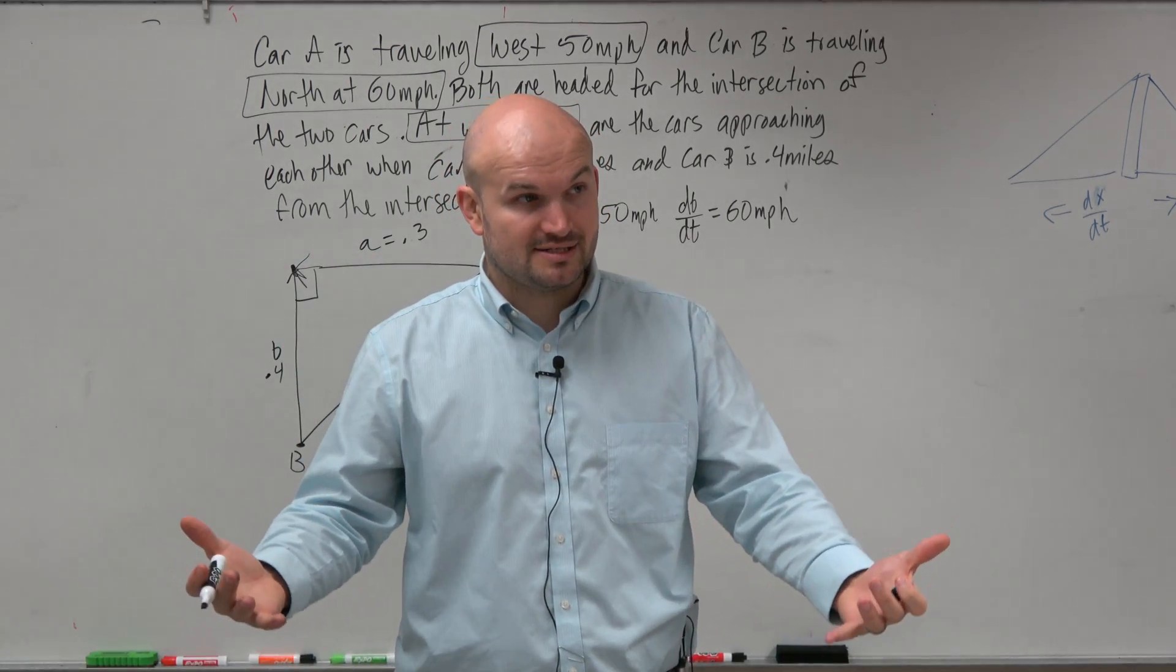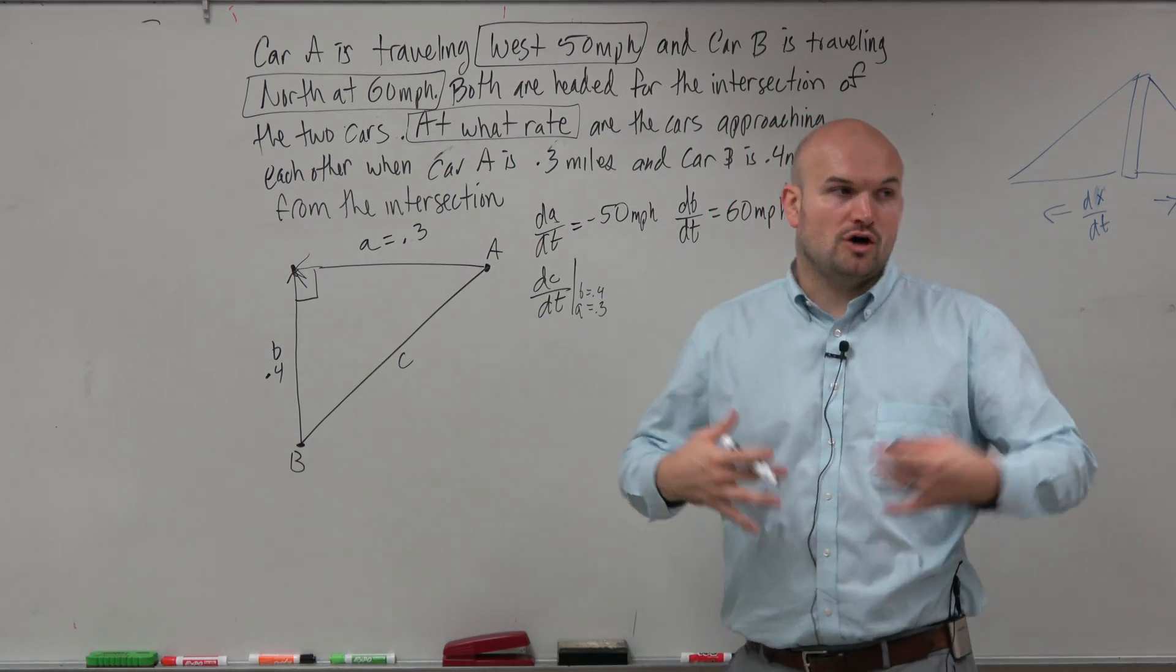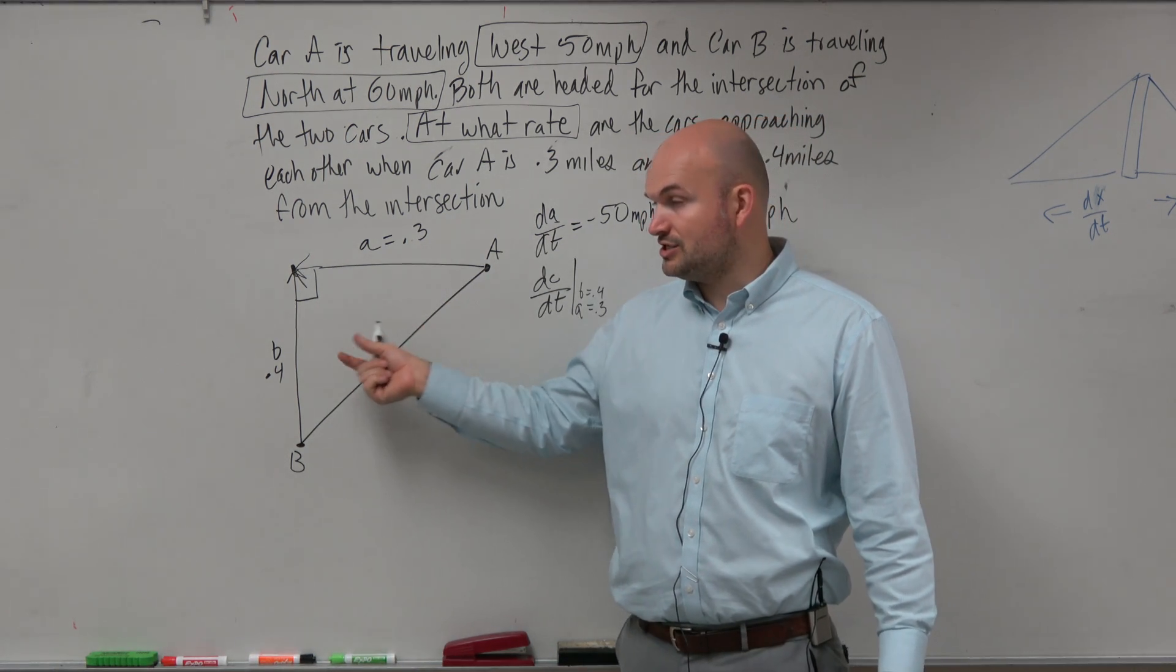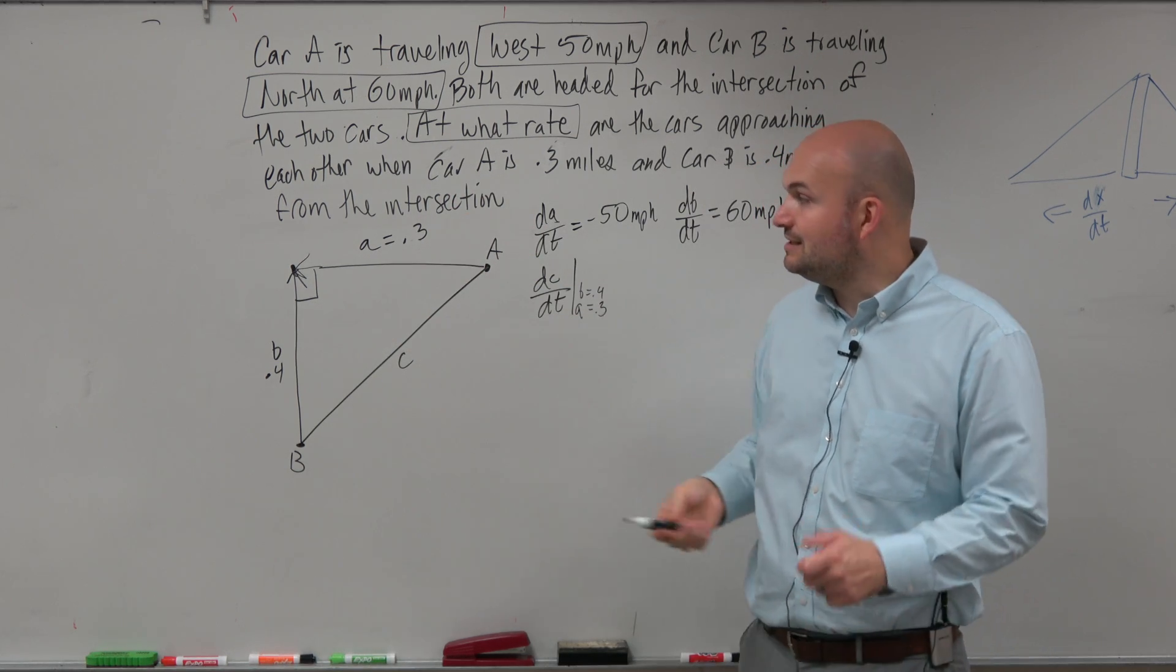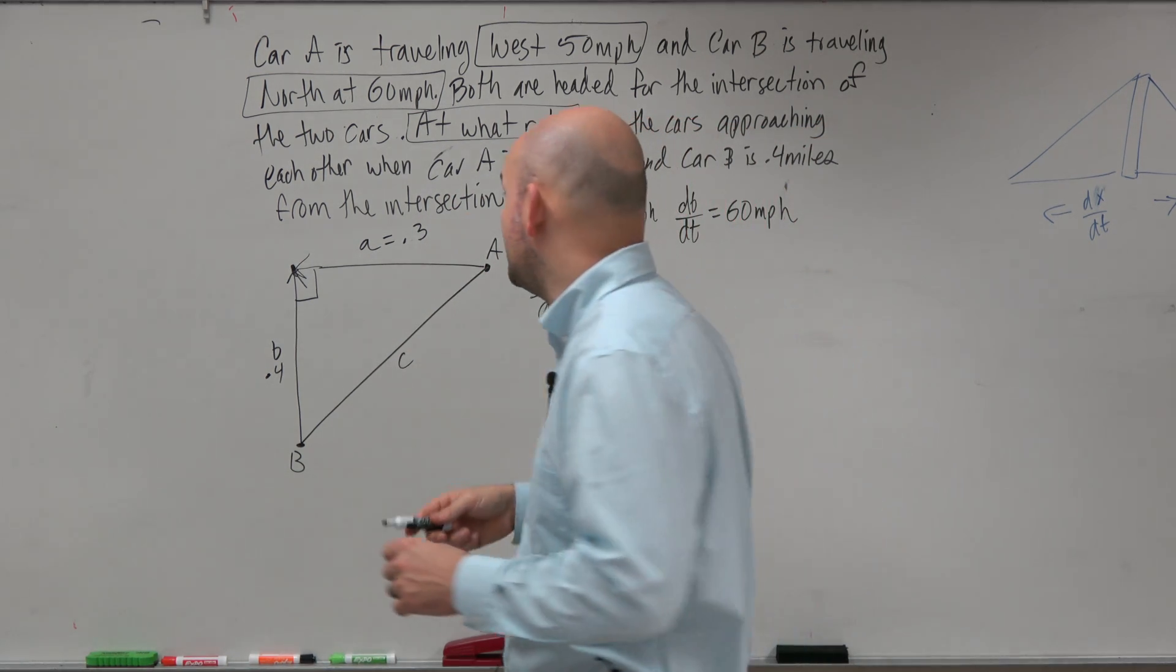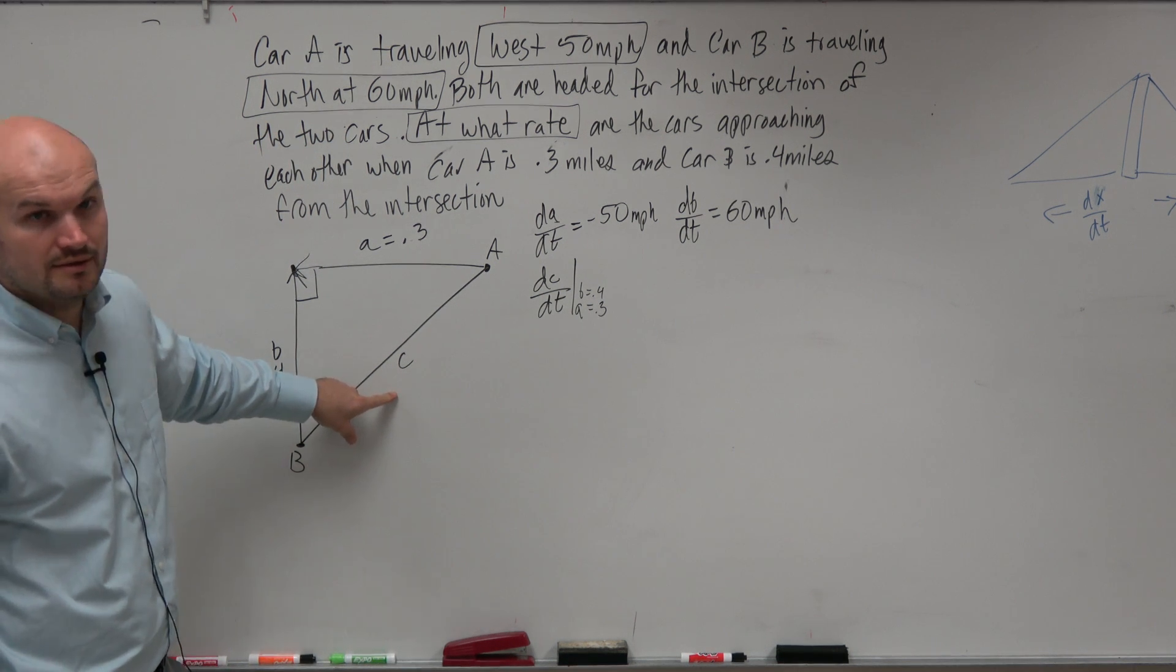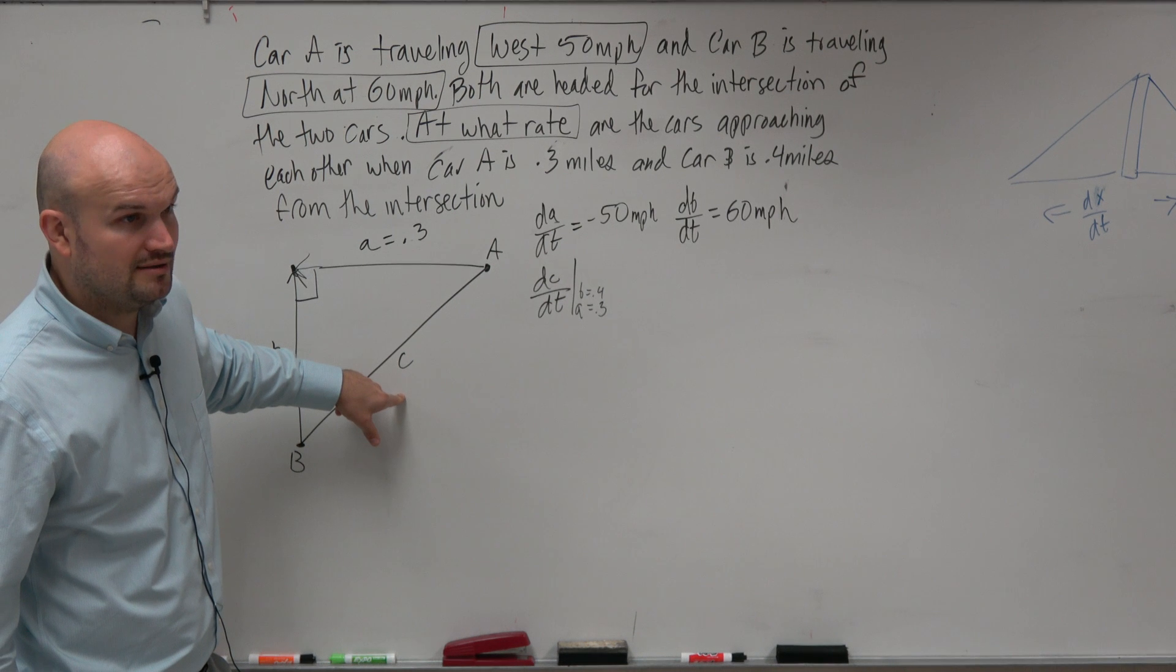Does everybody at least understand? I haven't even done any math yet. All I've done is taken the information and read it down. I'm talking about rates, so I draw a picture, I write down all the possible rates that I could possibly have. dC/dt represents how the changes are different. We have our dA/dt, our dB/dt, and we have our distances. We don't know what C is, do we? Could we find C?